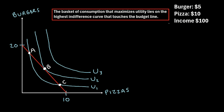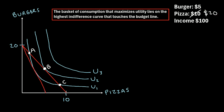Now let's consider the scenario where the price of one of these goods changes. Let's say that the price of pizza increases to $20 per pizza. When this happens, our budget line on our graph will move. Previously, if we spent all of our money on pizza, we could buy 10 pizzas. But now if pizza costs $20 each and we only have an income of $100, we could only buy five pizzas, so our budget line shifts downwards.